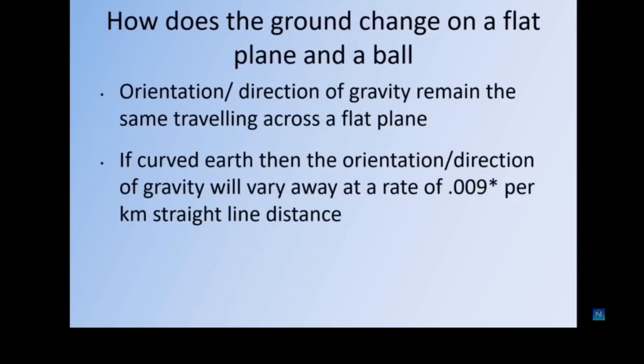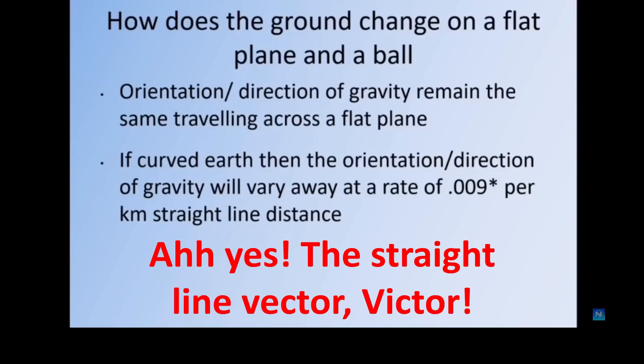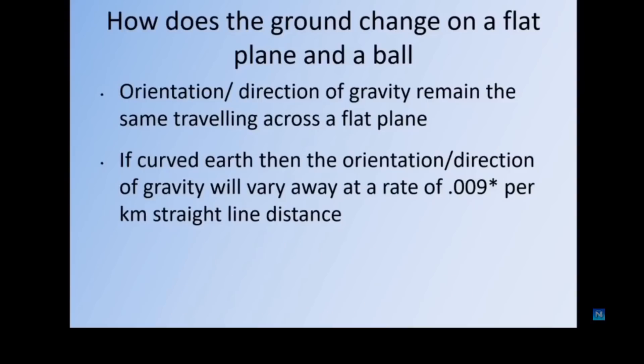So with all that in mind and the data gathered, I wanted to just discuss the concept of how does the ground change on a flat plane and a ball when you're flying in a straight line vector. Orientation direction of gravity remain the same if we're traveling across a flat plane, summarized here. If we're traveling across a ball earth, the orientation direction of gravity will vary at a rate of 0.009 degrees per kilometer of straight line vector travel.